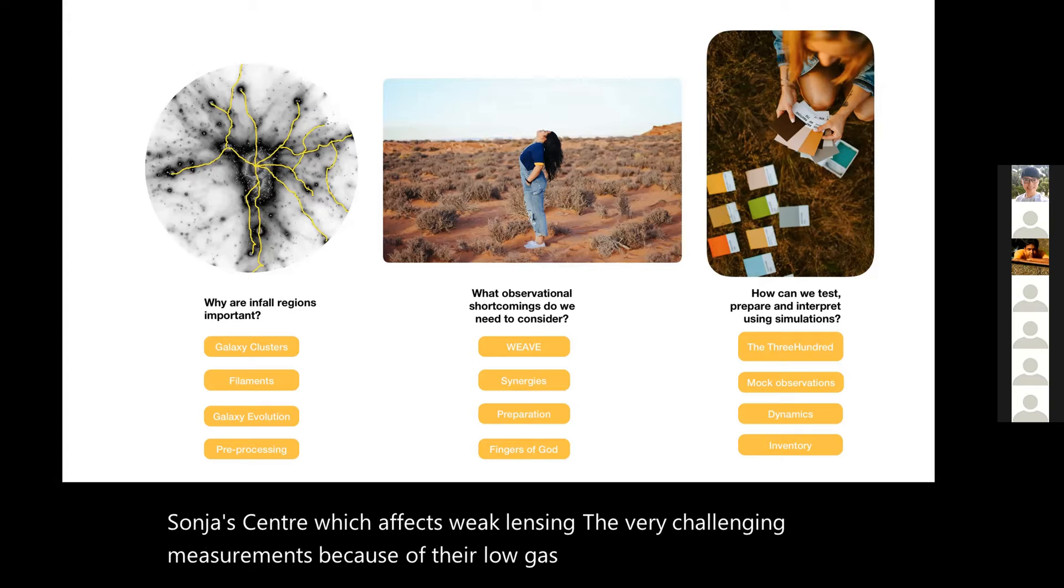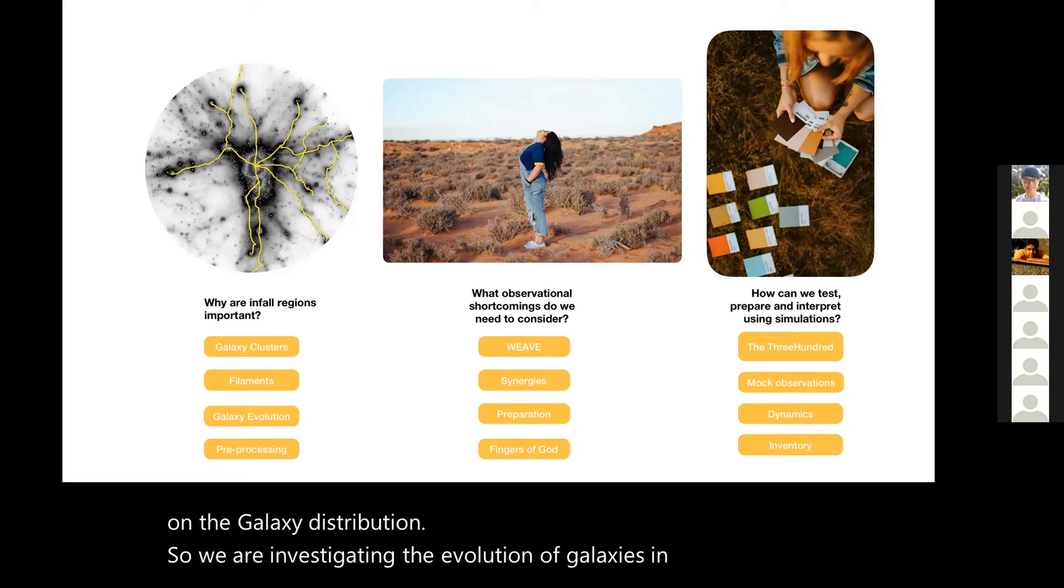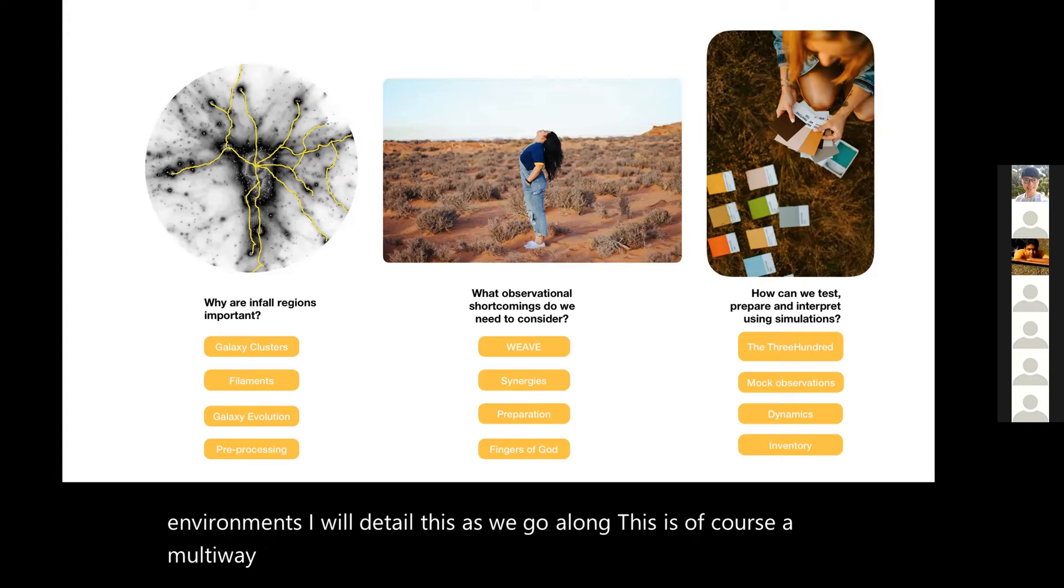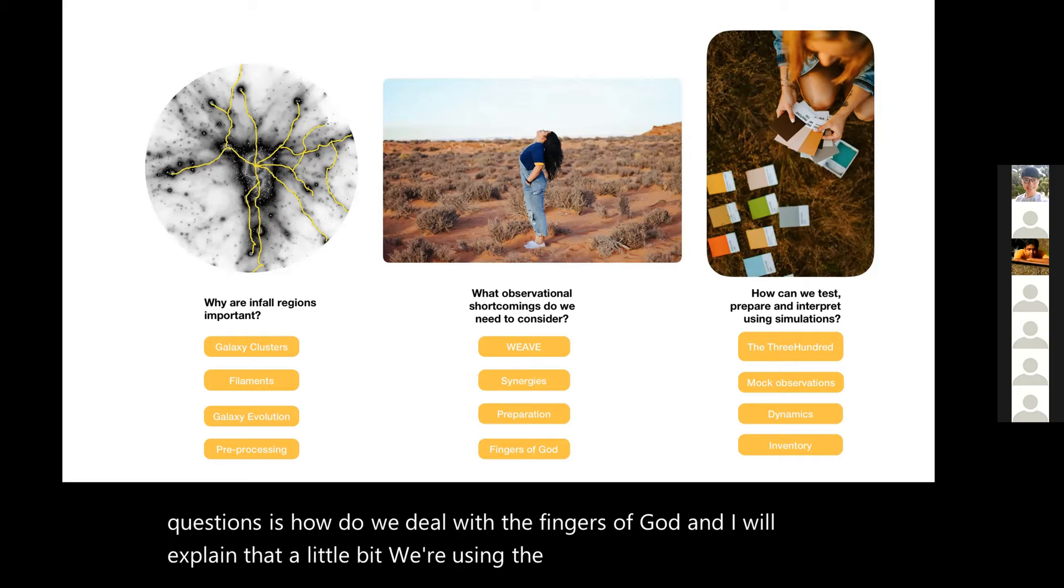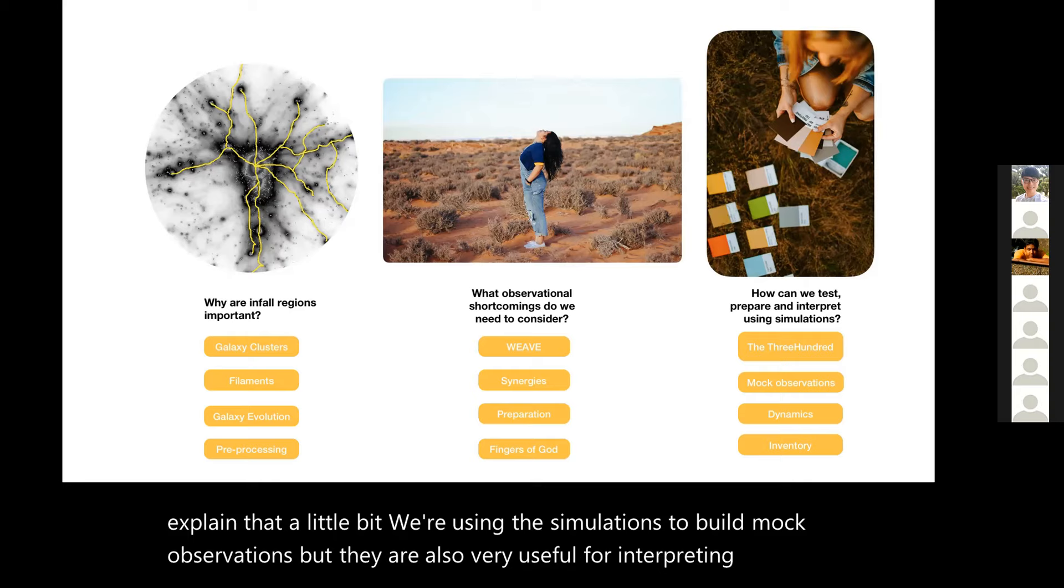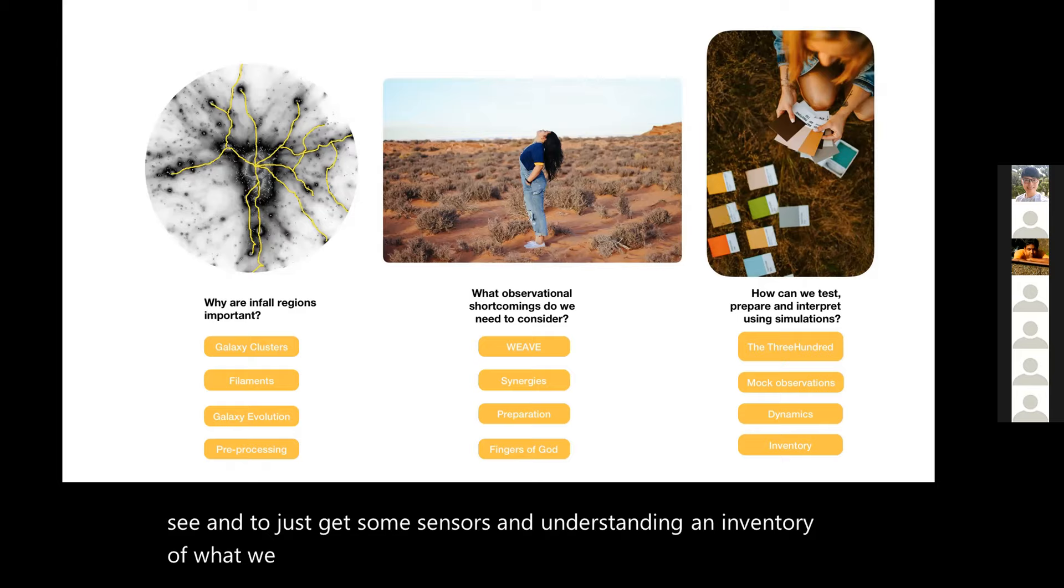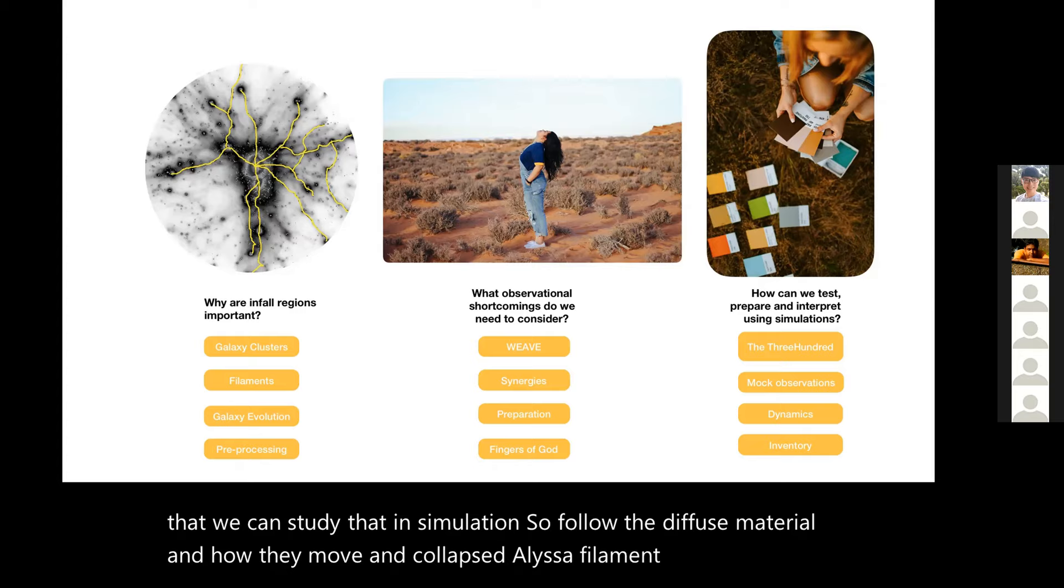I, or we, will focus on the galaxy distribution. We are investigating the evolution of galaxies in different environments. I will detail this as we go along. This is of course a multi-wavelength and multi-instrument question. I'm just focusing on WEAVE and some synergies with other instruments. We are deep in the process of preparing for this survey. One of the big questions is how do we deal with the fingers of God? We are using the simulations to build mock observations. They're also very useful for interpreting what we see and to get some senses and understanding of what we can expect.